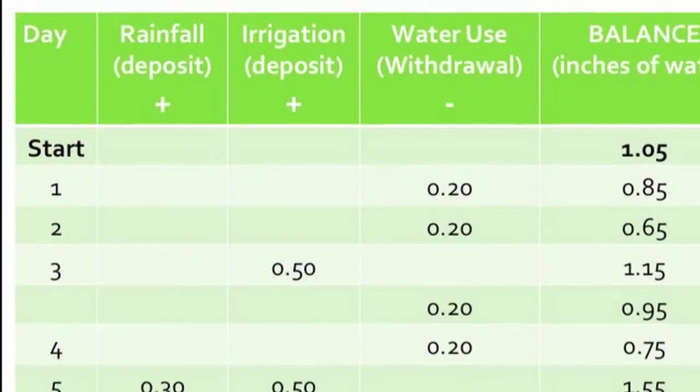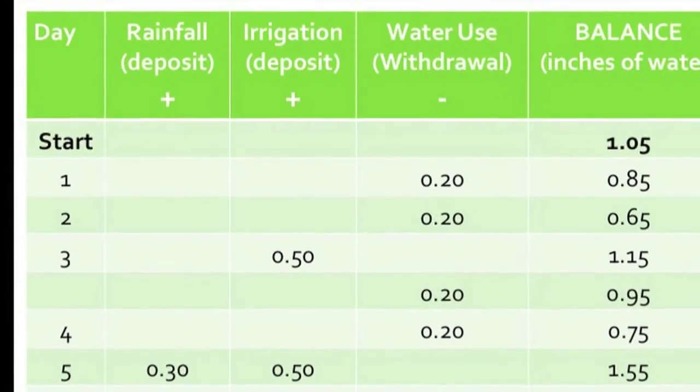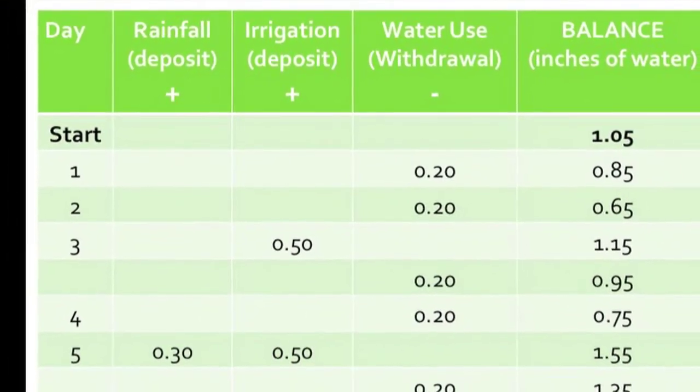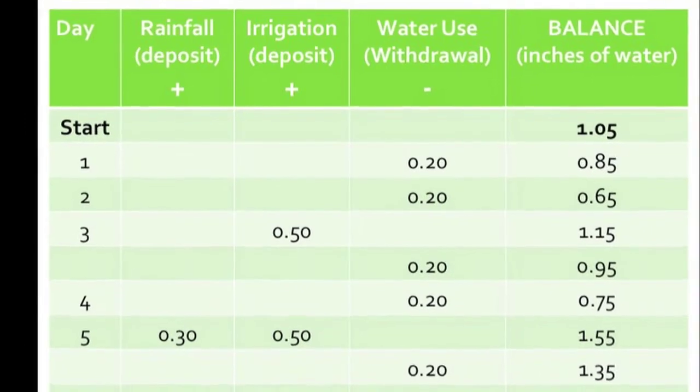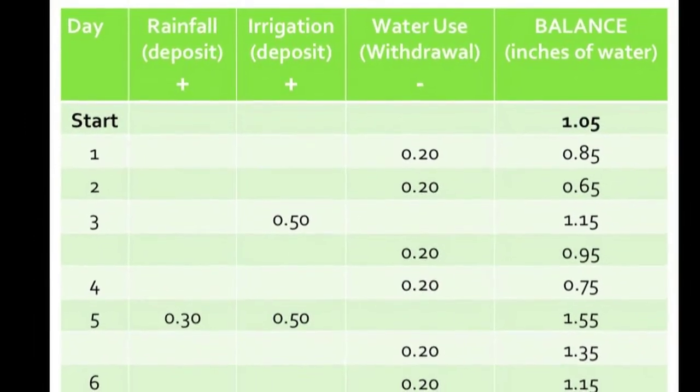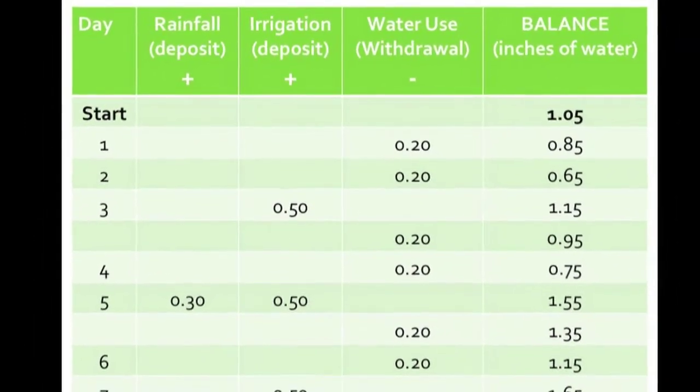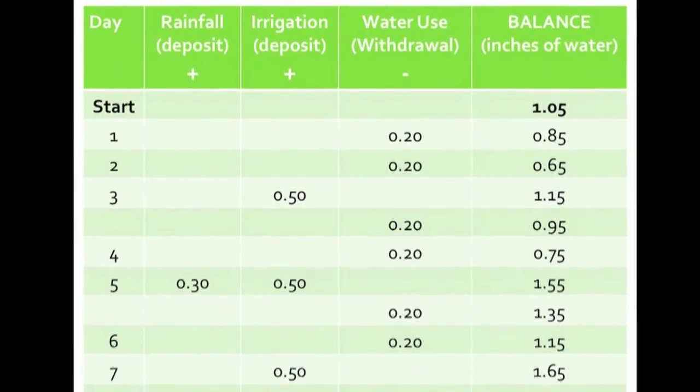You determine a starting water balance in the soil. You then figure out what you want to be your minimum water balance, and you will keep track of how much water is being used by trees, how much water is coming in from rainfall, and you will add irrigation to maintain the balance above the preset minimum. We have publications providing details on how to run the checkbook method on our website.